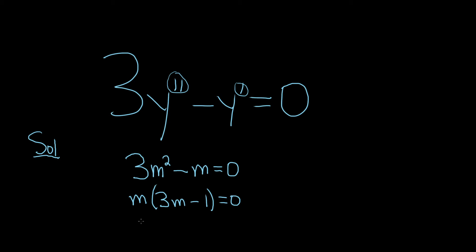So we have a product equal to 0, so we can set each factor equal to 0. So we have m equals 0, and then 3m minus 1 equals 0. That means that m equals 0, and then here we can add 1 and divide by 3, and that will give us m equals 1/3.